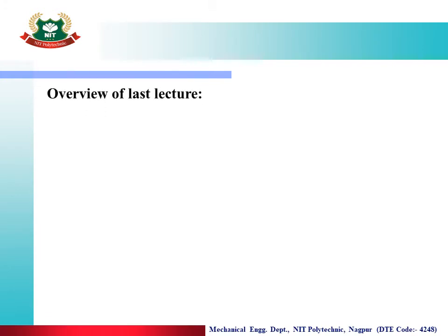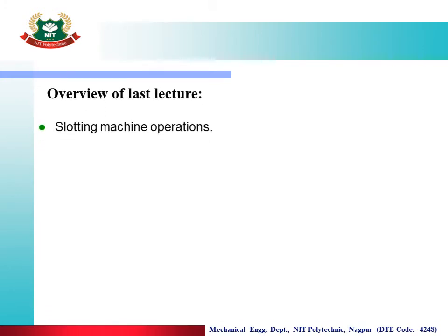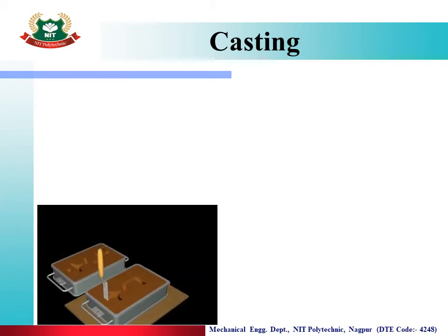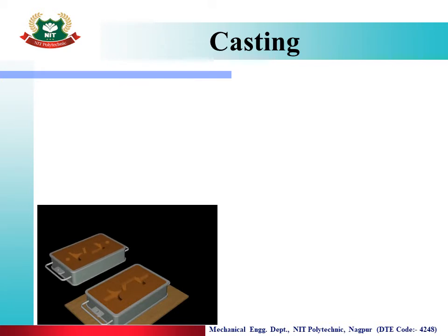Overview of the last lecture: the last lecture covered the Slotting Machine, which is Unit 2 of our syllabus — Shaper and Slotting Machine. Now we will discuss Casting.